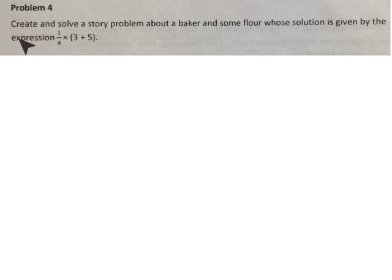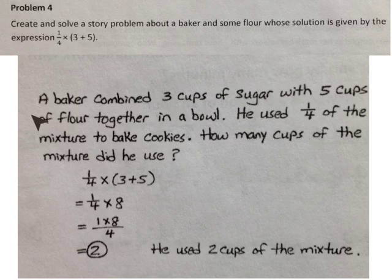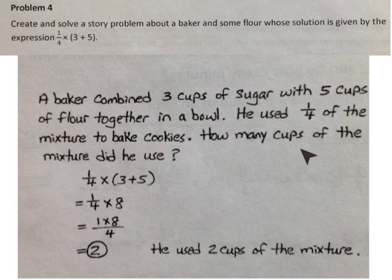In problem 4, we're asked to create and solve a story problem about a baker and some flour, whose solution is given by the expression 1/4 times the sum of 3 and 5. While there are many possibilities, here is one. A baker combined 3 cups of sugar and 5 cups of flour together in a bowl. He used 1/4 of the mixture to bake cookies. How many cups of the mixture did he use? 1/4 times the sum of 3 and 5. 3 plus 5 is 8. 1/4 times 8 is 1 times 8 over 4. 8 divided by 4 is 2. He used 2 cups of the mixture.